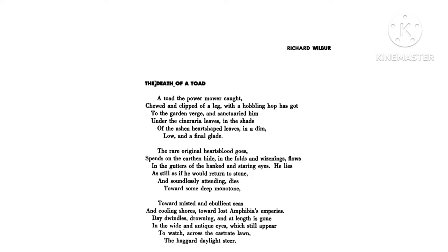The poem begins: 'A toad the power-mower caught, chewed and clipped off a leg, with a hobbling hop has got to the garden verge, and sanctuaried him under the cinerea leaves, in the shade of the ash and heart-shaped leaves in a dim low and a final glade.'